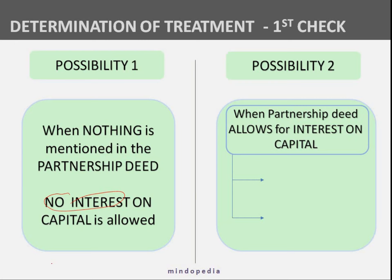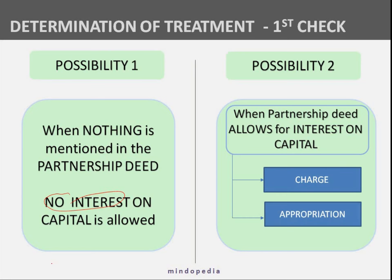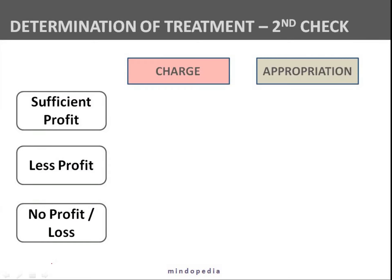Let us go ahead and understand possibility two. Possibility two is when the partnership deed allows for interest on capital. If the partnership deed says interest on capital is allowed, then we'll check what else is mentioned — specifically whether it is a charge or an appropriation.